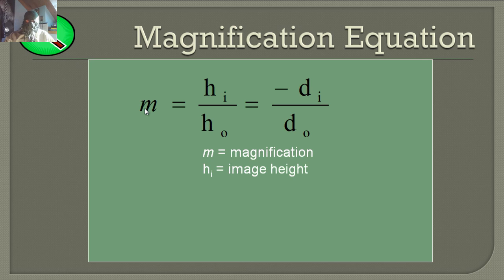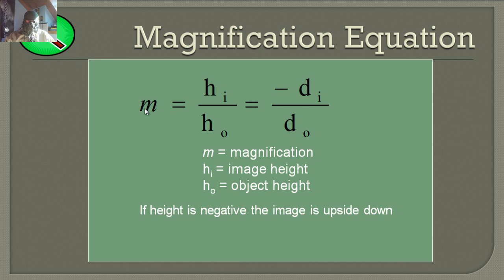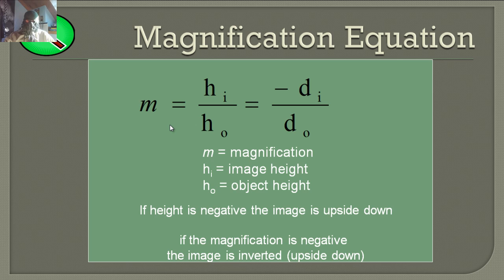m stands for magnification. If the height is negative, then the image is flipped over. If the magnification is negative, the image is inverted — upside down. So if m turns out to be negative in your calculations, you have an upside-down inverted image.